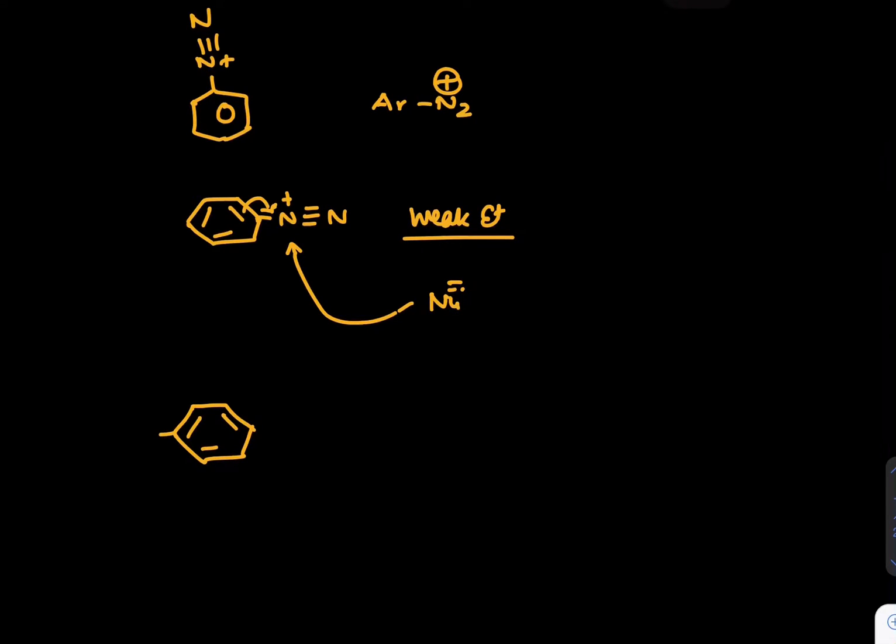If you take phenol and take phenol in slightly basic medium, let's say pH equals 7 to 9 range, what will happen? The phenol will convert into, at pH 7 to 9 range, this will convert into phenoxide ion.